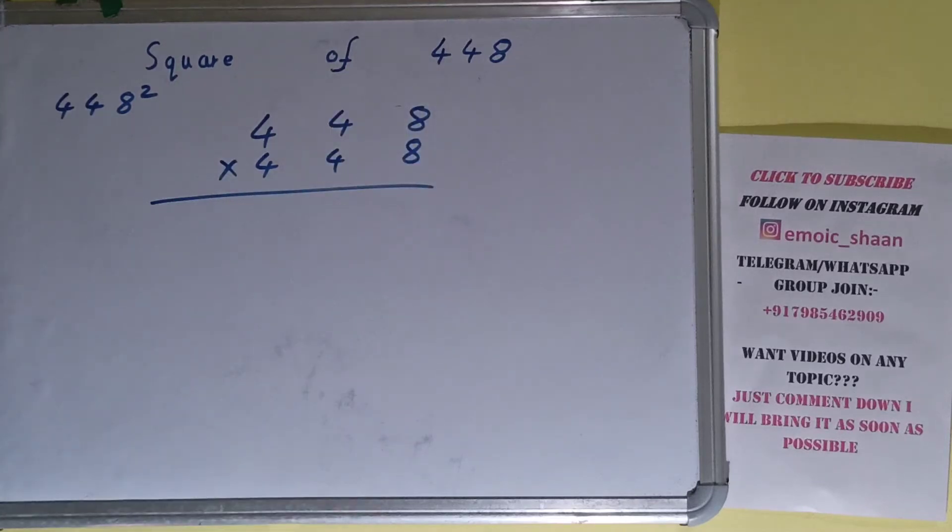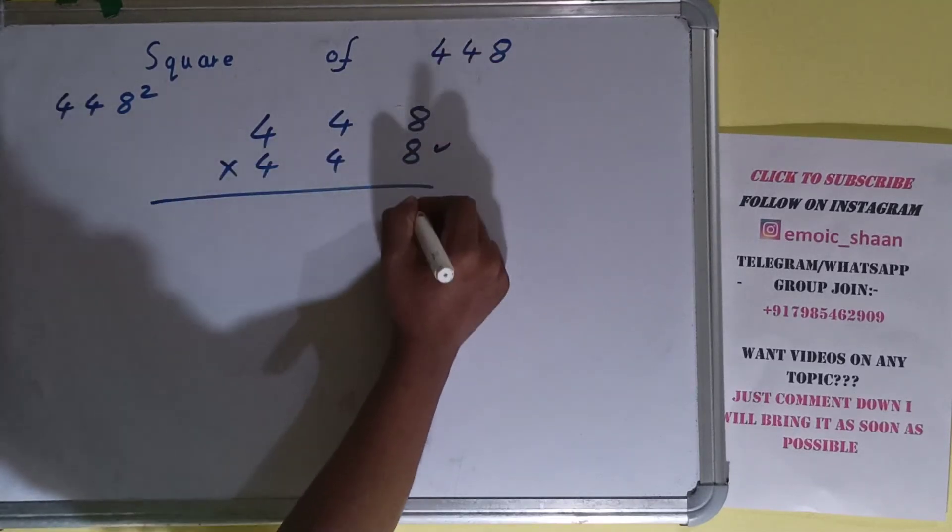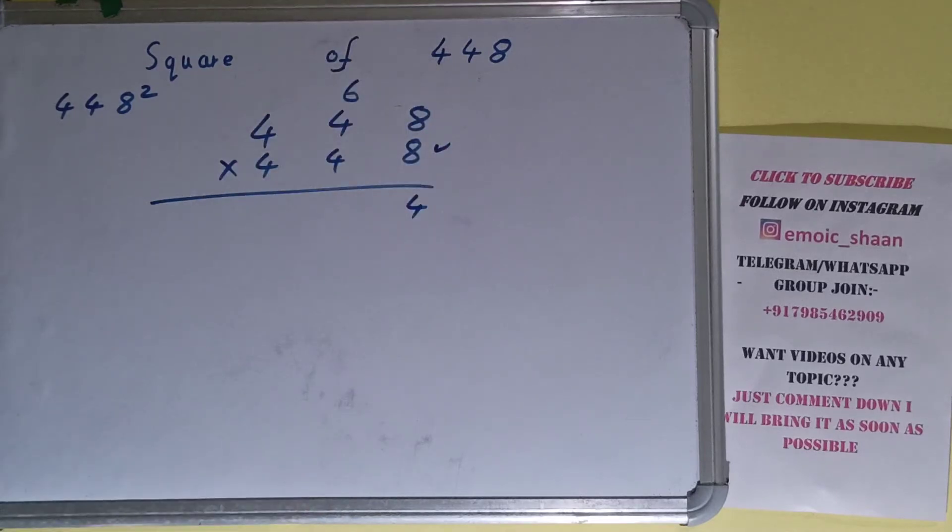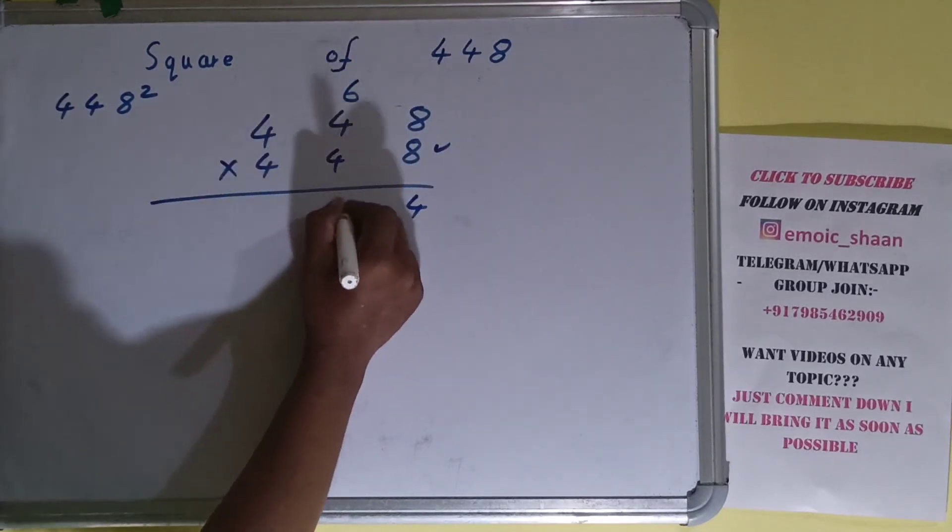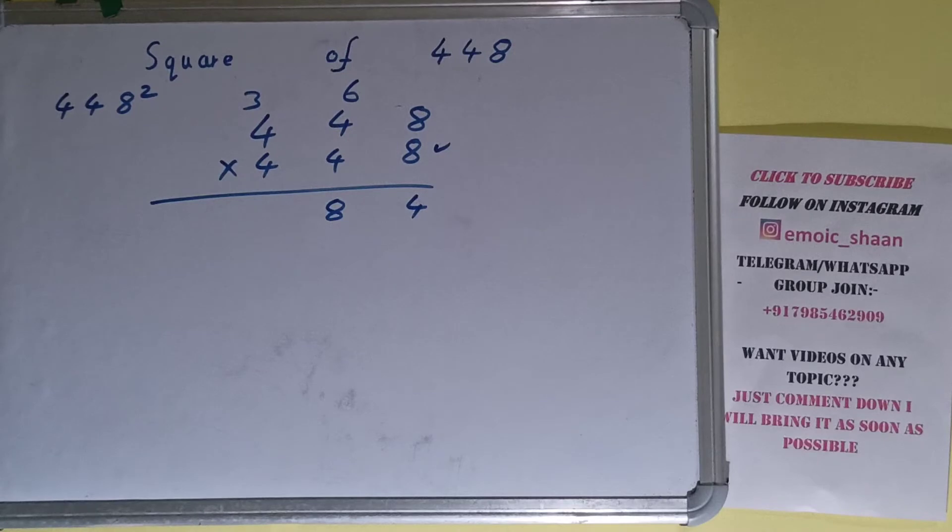Let's begin with this: 8 times 8 is 64, 6 carry. 8 times 4 is 32 plus 6 is 38, 3 carry. Again, 8 times 4 is 32 plus 3 is 35.